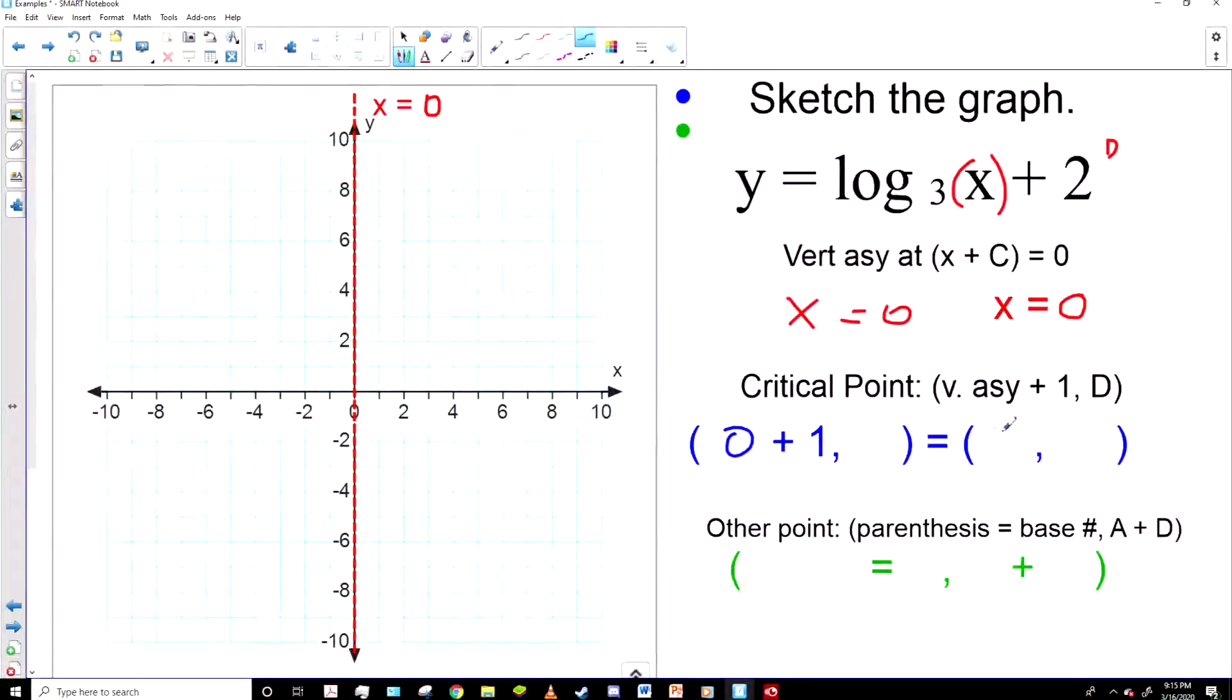For the critical point, we find the vertical asymptote and add one to it, so zero plus one, and then just bring down the D term, which is two, and we get a point at one, two.